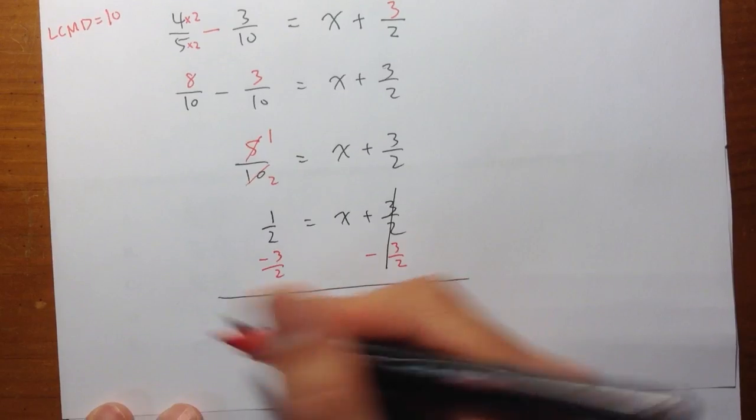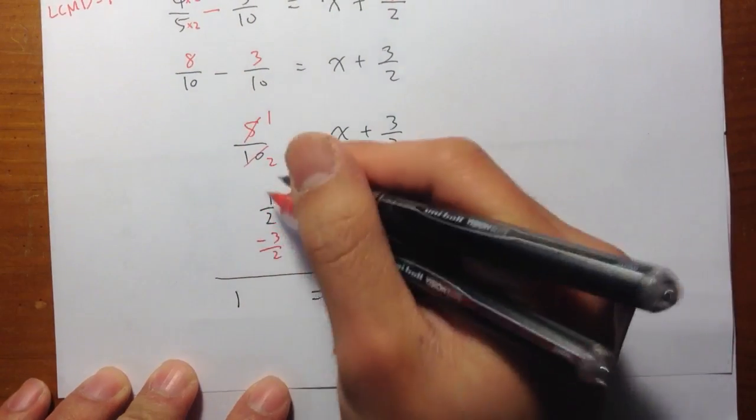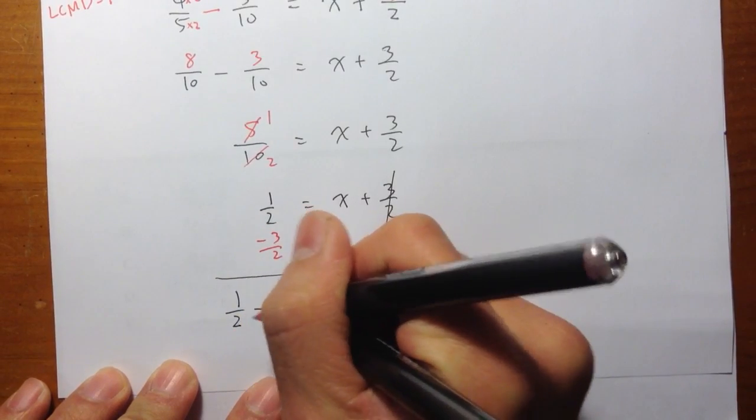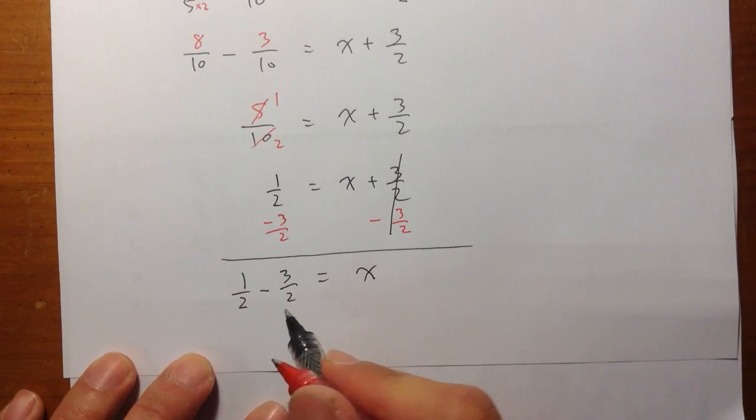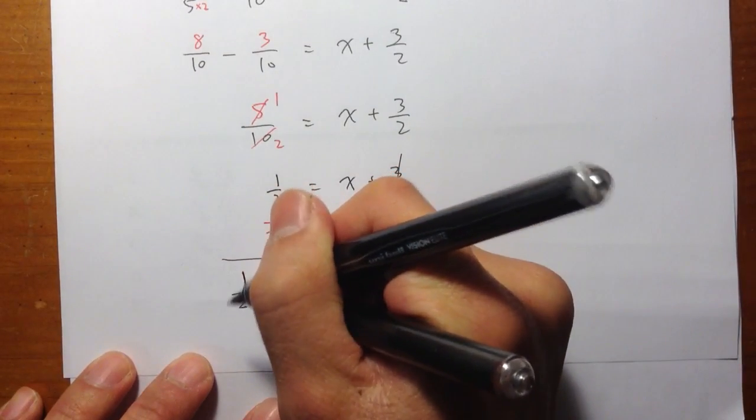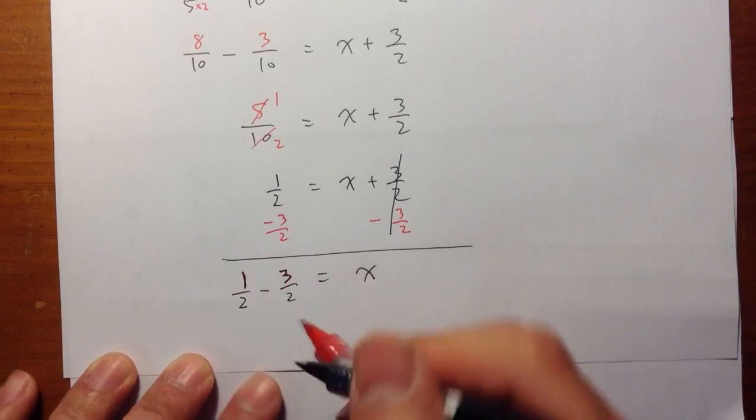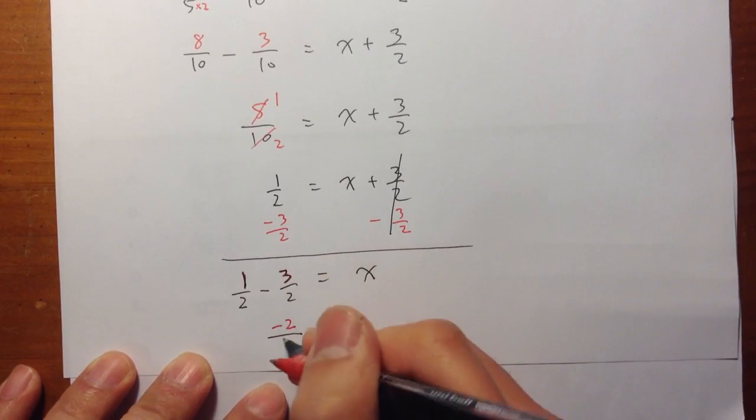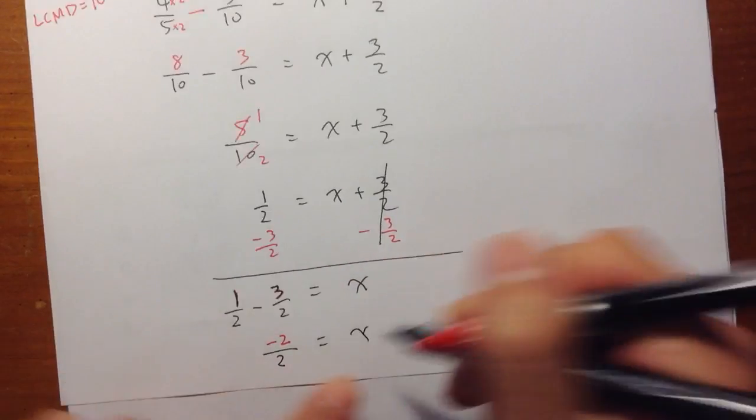And let me write this down horizontally. I have 1. I want to subtract. Sorry, I have 1 half. I want to subtract 3 over 2. They already have the same denominator. So I just need to take the 1 on the top, subtract the 3 on the top. 1 minus 3 is equal to negative 2. And the denominator stays the same. So negative 2 over 2 is the value for x.